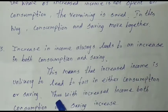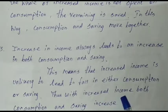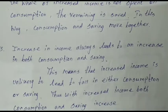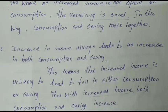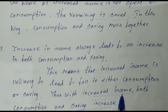With increasing income, both consumption and savings increase. Income increases, and consumption and savings are also available. So this completes the three proportions of the Keynesian Psychological Law.